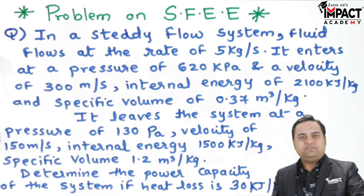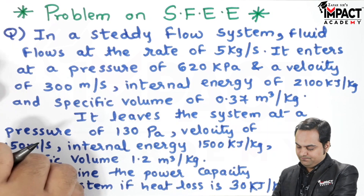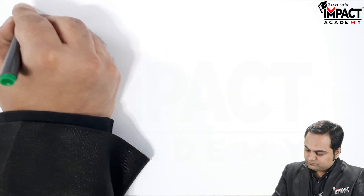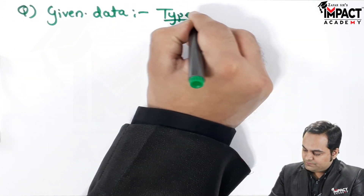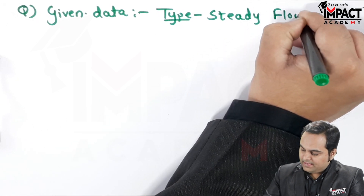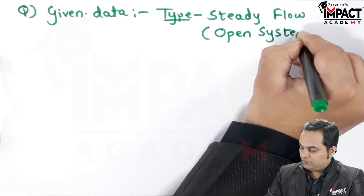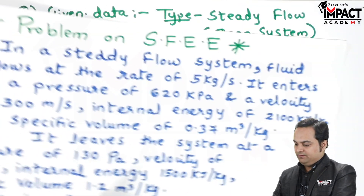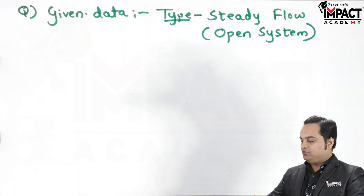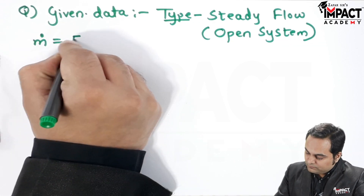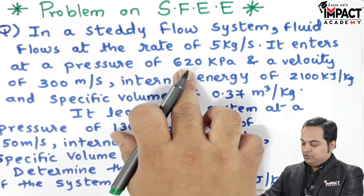Here is the question. I'll write the data: it is given that in a steady flow system — a steady flow system means open system — so we can apply SFEE here. The fluid flows at a rate of 5 kg per second, so the mass flow rate is given.